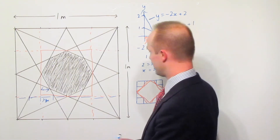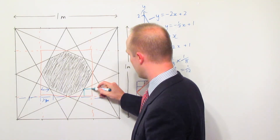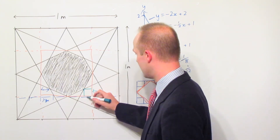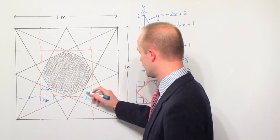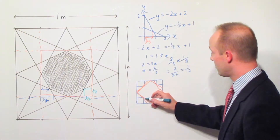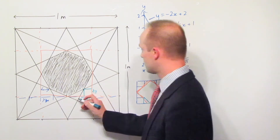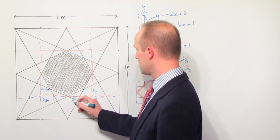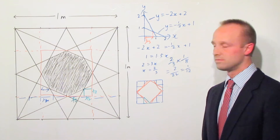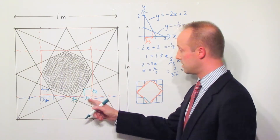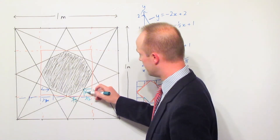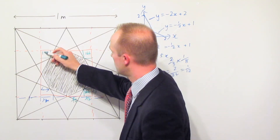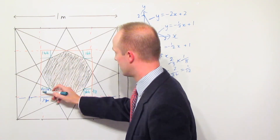We've got this corner section here, and we can work out what that is because we know each side of it is one twelfth of a metre. The area of that individual part is one twelfth multiplied by one twelfth, which is one over 144. We can work out the area of these triangles as well, because we know that distance has got to be twice that, so that has got to be two twelfths. There are four such corner squares, each with area one over 144.